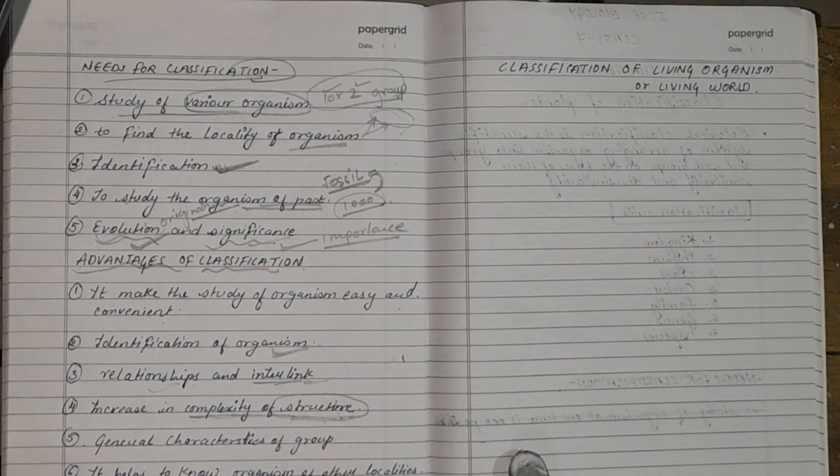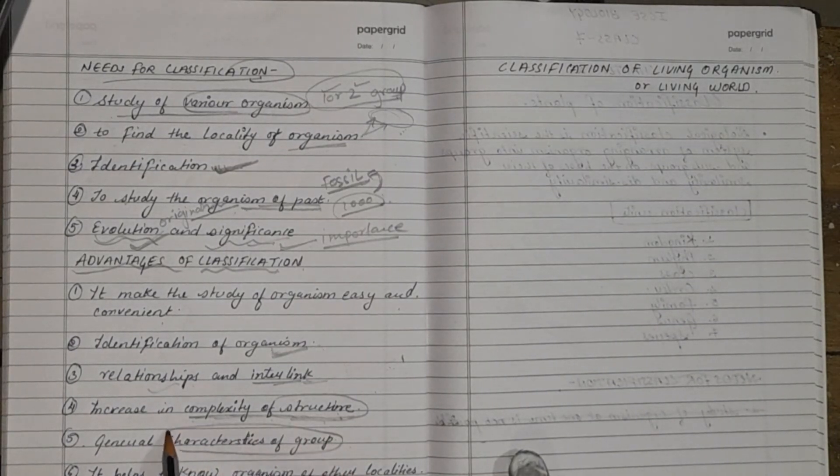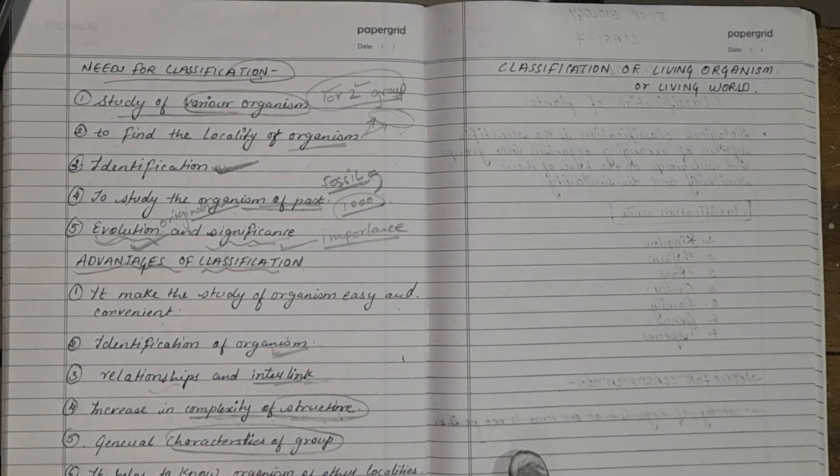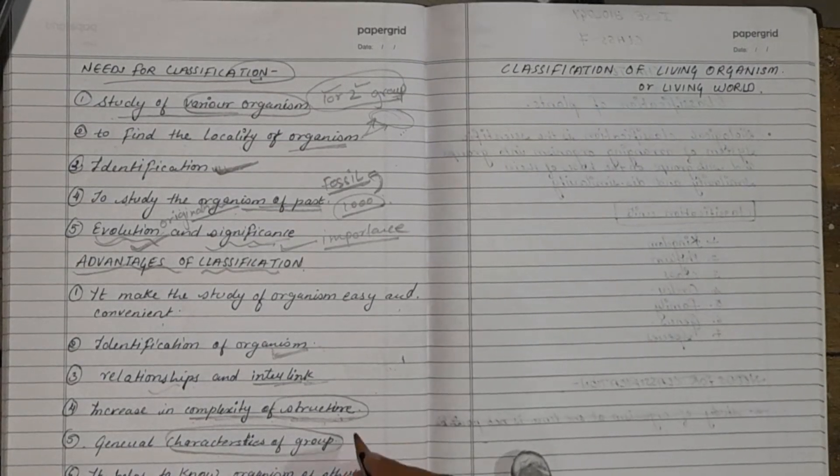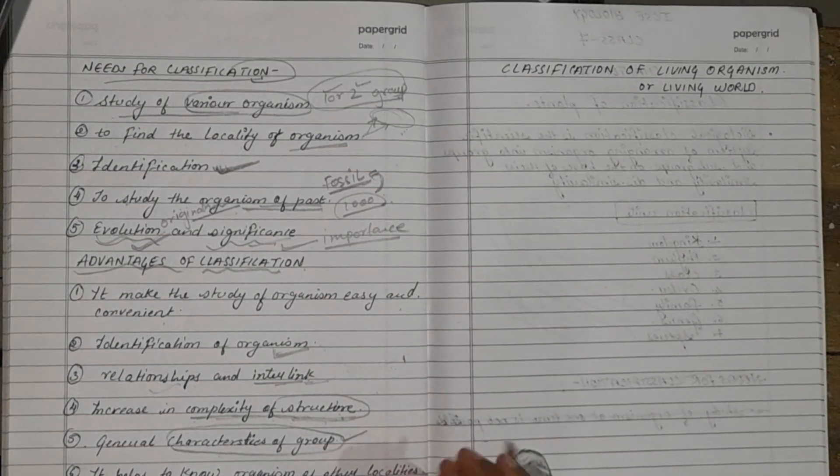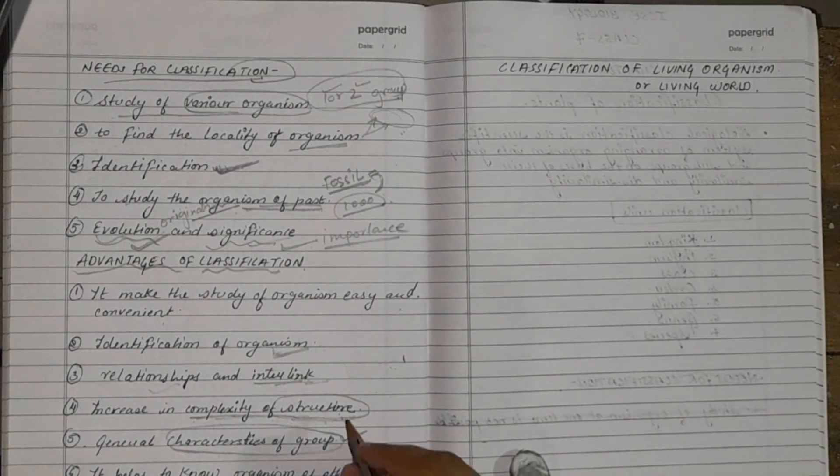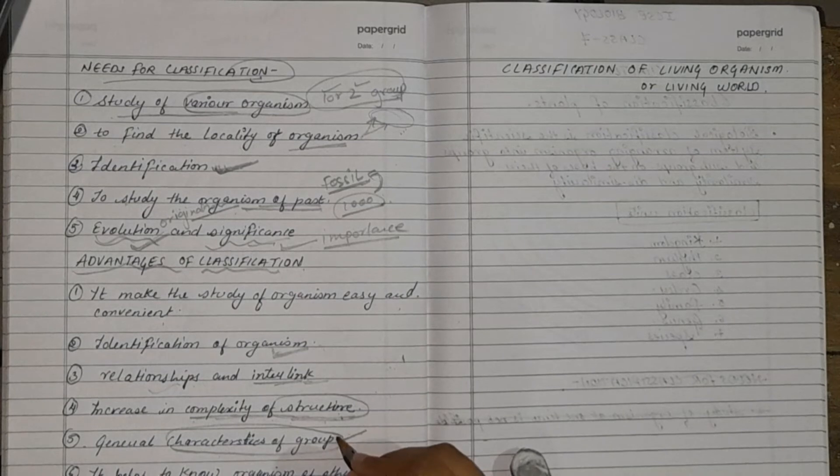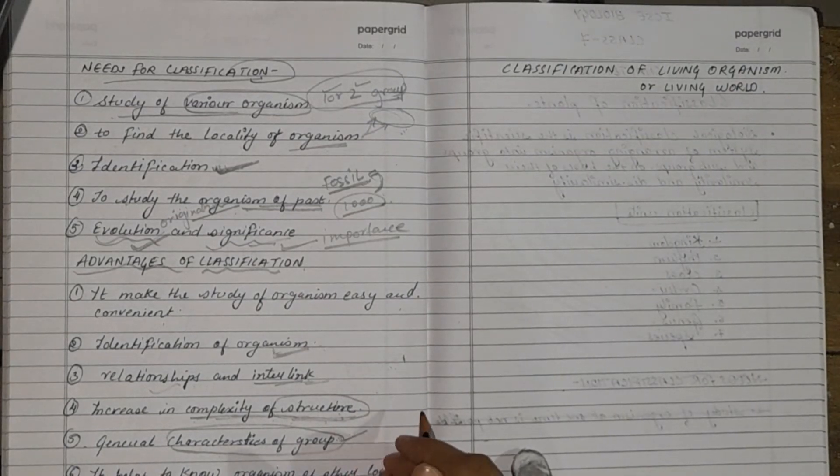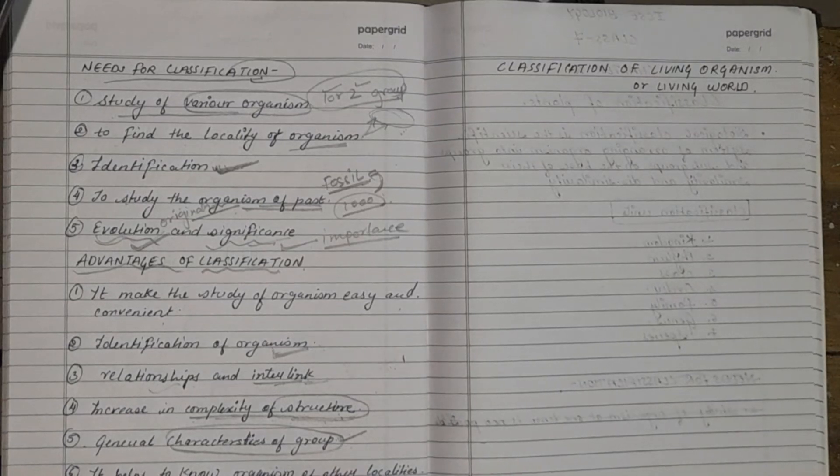The next point is general characteristics. If we are studying a group, if we are taking a group of a classification and if we are studying the general characteristics, all the organisms which lie under that particular phylum group or kingdom have the same characteristics or have the general characteristics of the kingdom or phylum which we are studying.